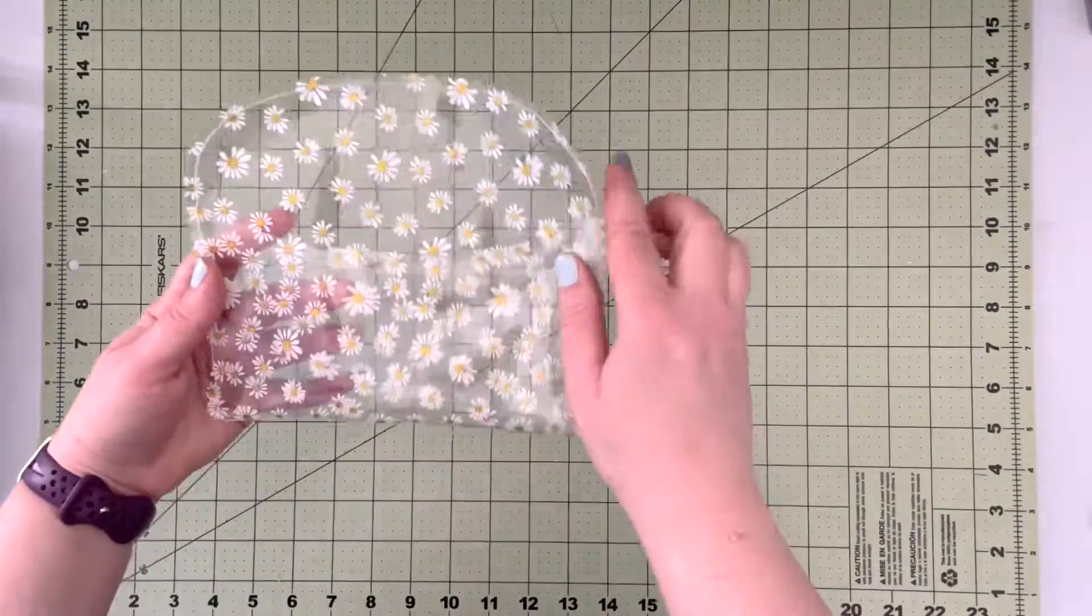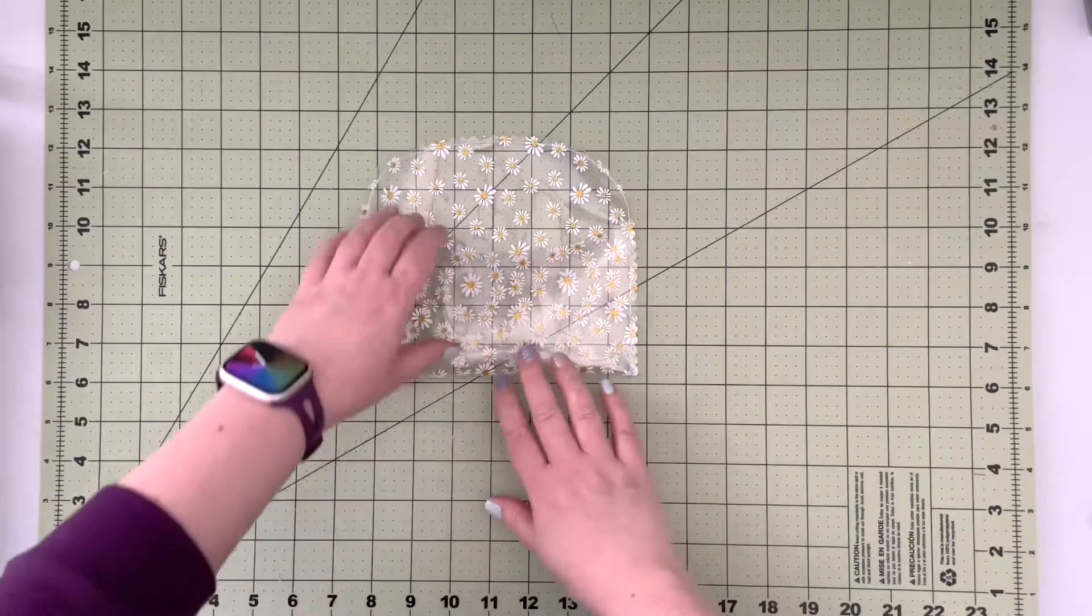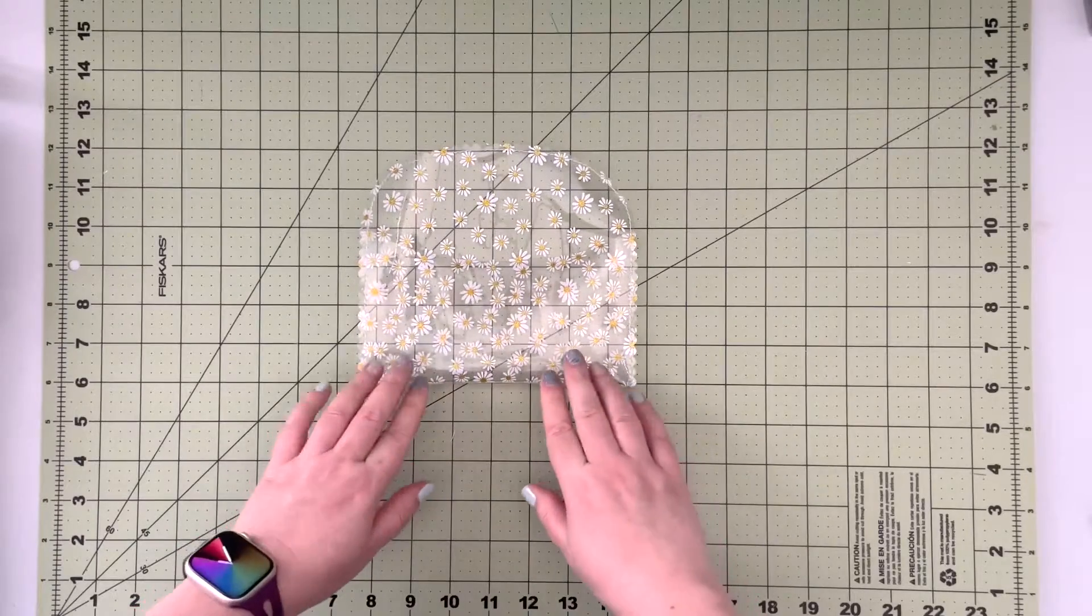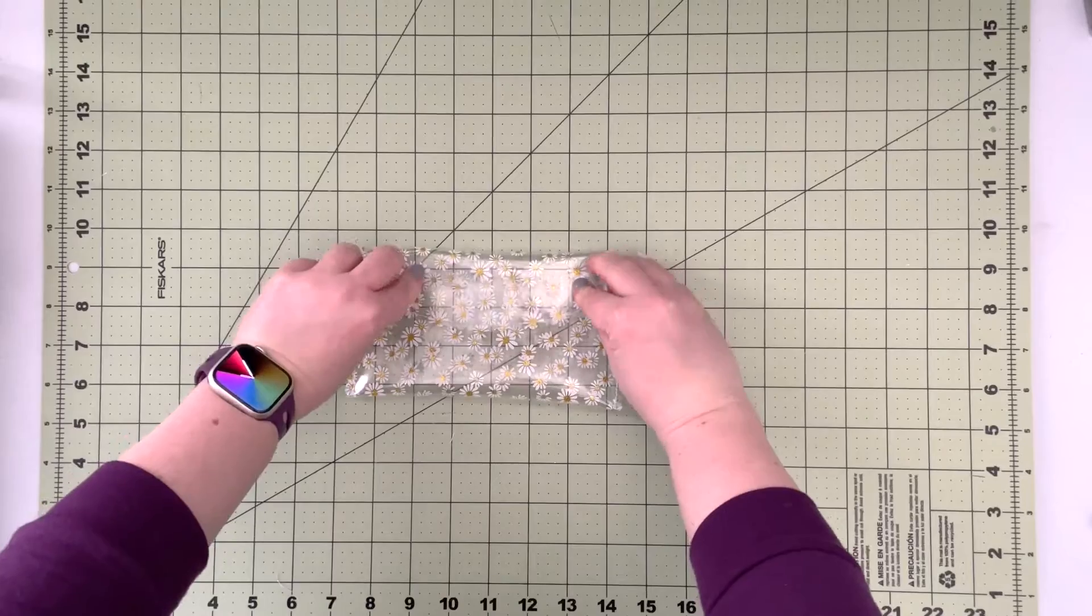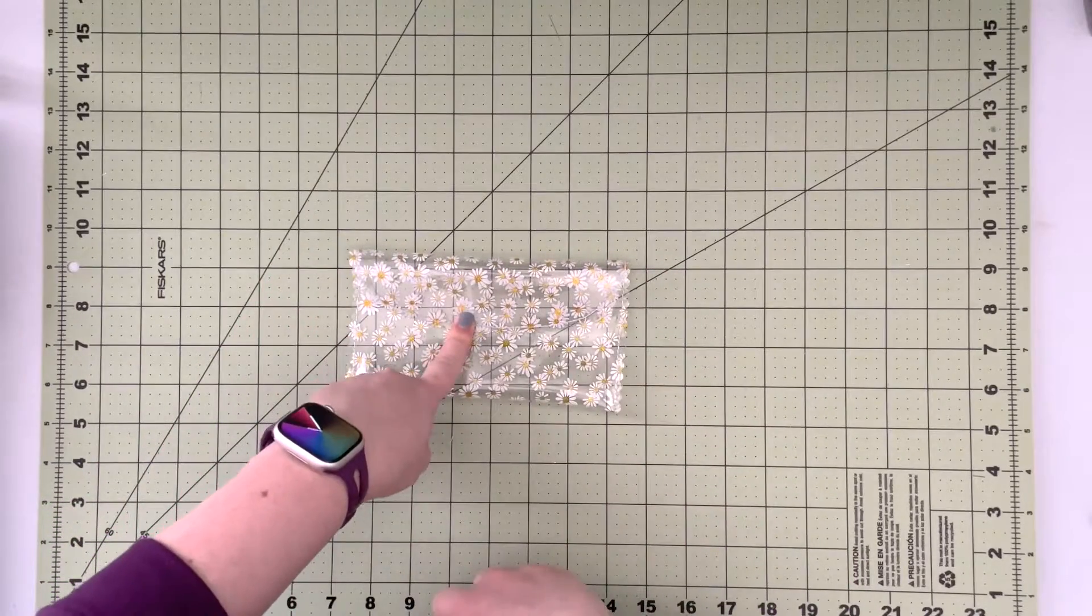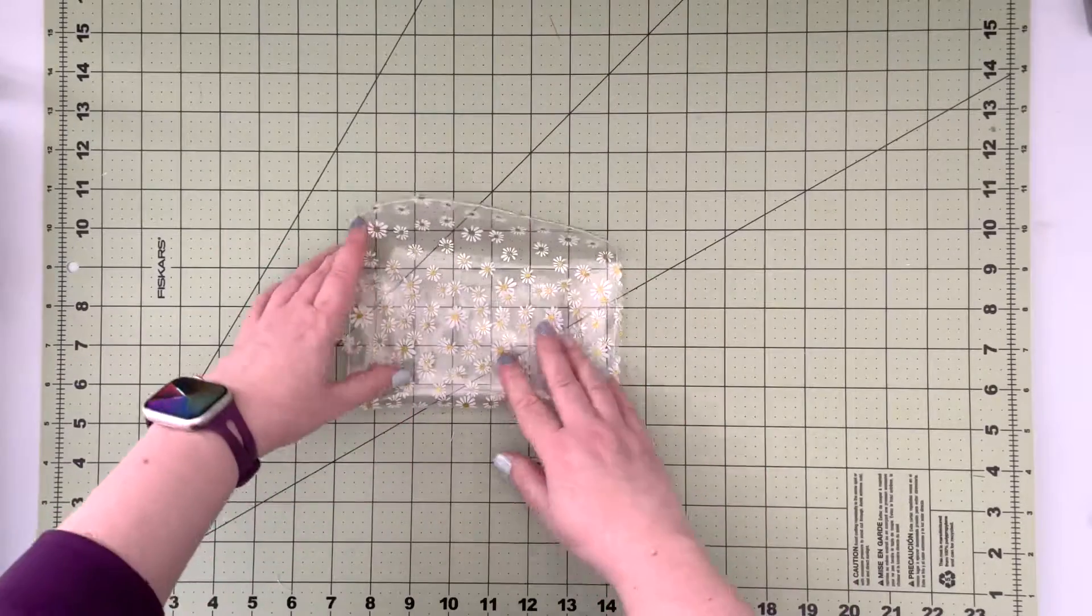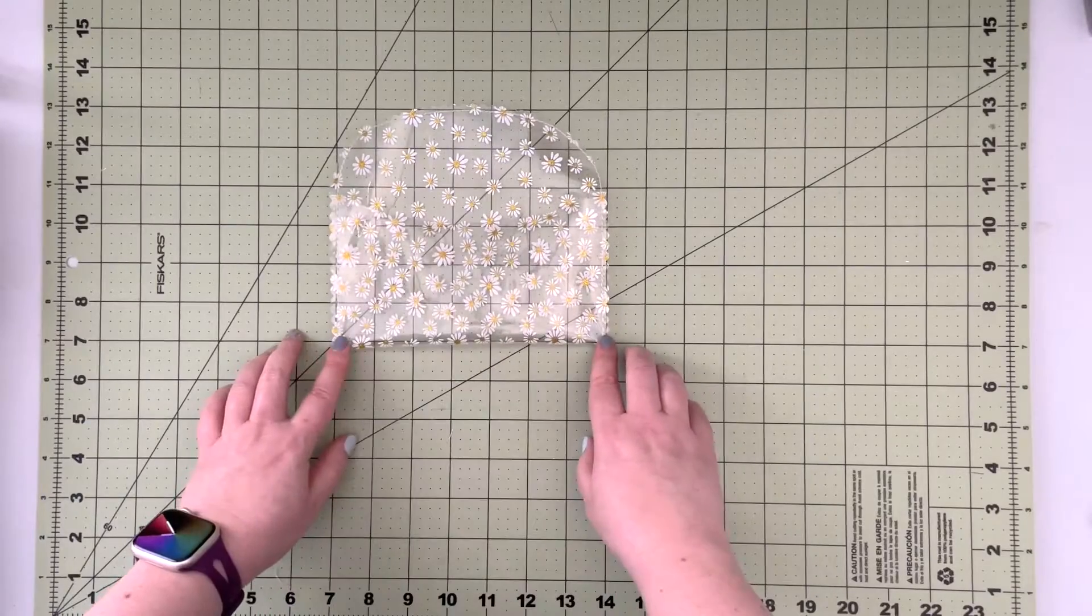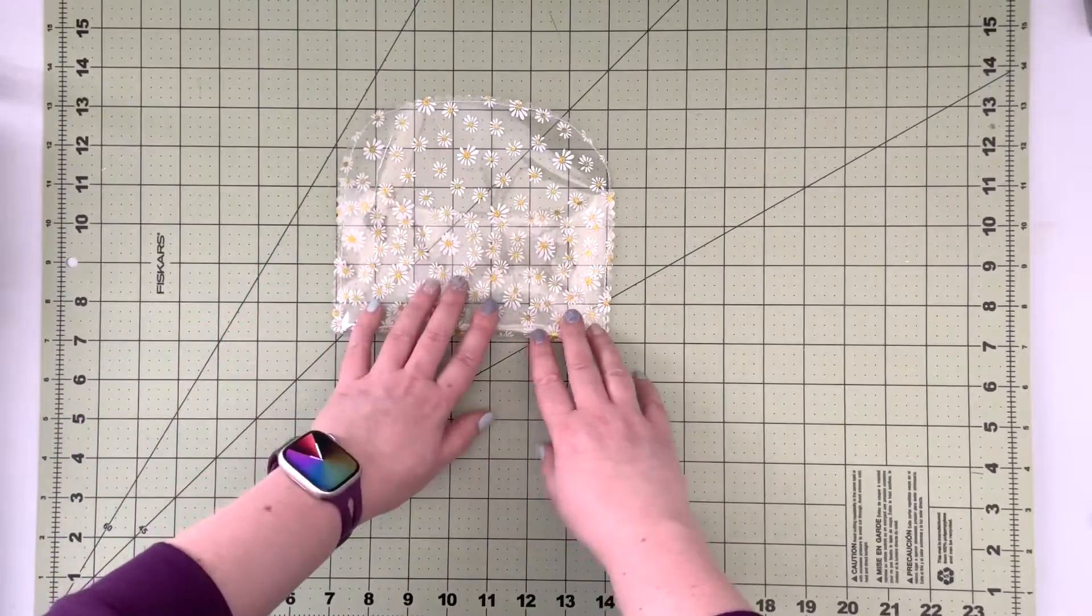Now that my seam allowance is trimmed I'm gonna split my little pouch bucket into three smaller packets. This is up to you, you can leave it like this, just install your snaps and you have a little cute see-through pouch ready to go. I want to be able to have my supplies organized so I'm gonna split it into three. I'm gonna create two small packets on the side and leave one larger packet in the middle.